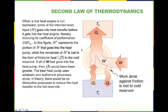When a real heat engine is run backwards — that is, you put in work — part of the input work goes to produce heat of friction and part is added to produce heat. This would be used in refrigeration or in something called a heat pump. W' represents the portion of work that goes into the heat pump, while the remainder is lost as friction. You use heat from the cold side plus additional work to pump heat into your home — this is how a heat pump works.